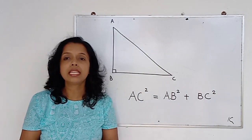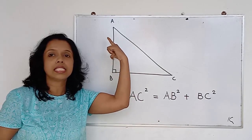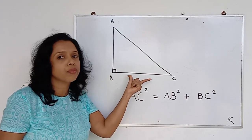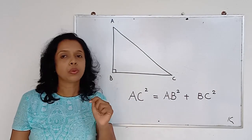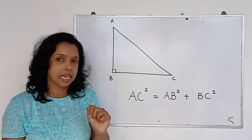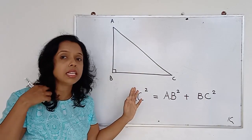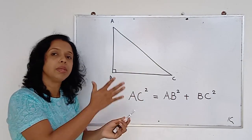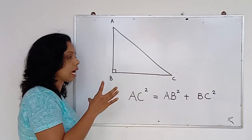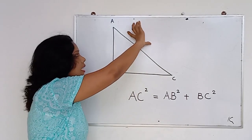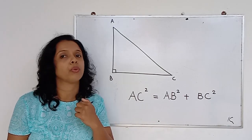We did one sum with this theorem where they gave us the AB side and BC side and we found the hypotenuse. Today I am going to discuss a different case: they have given the hypotenuse value and another side, and now we want to find the missing figure. So we have the hypotenuse AC and another side BC, and we want to find the value of AB.